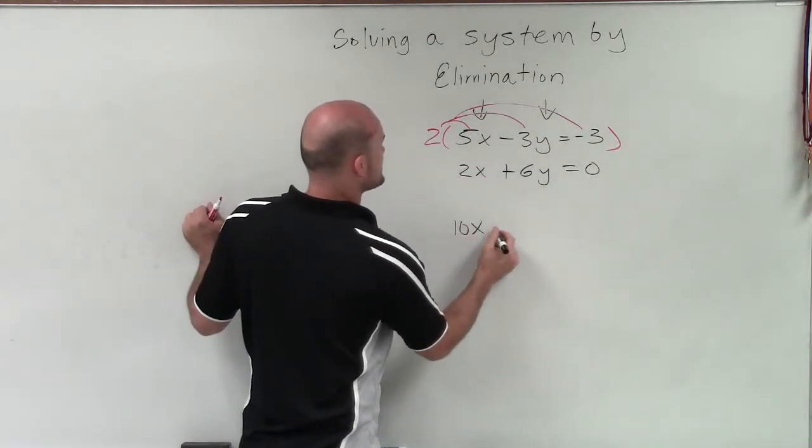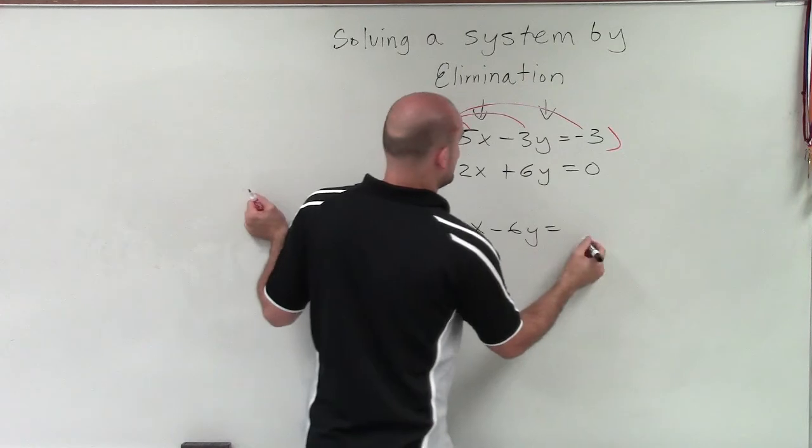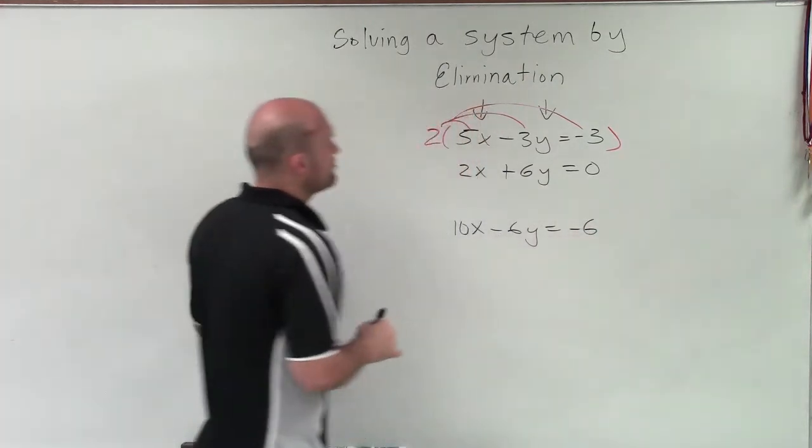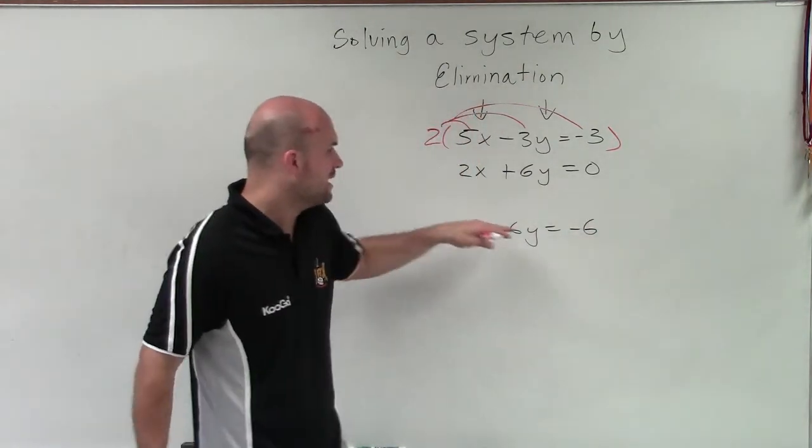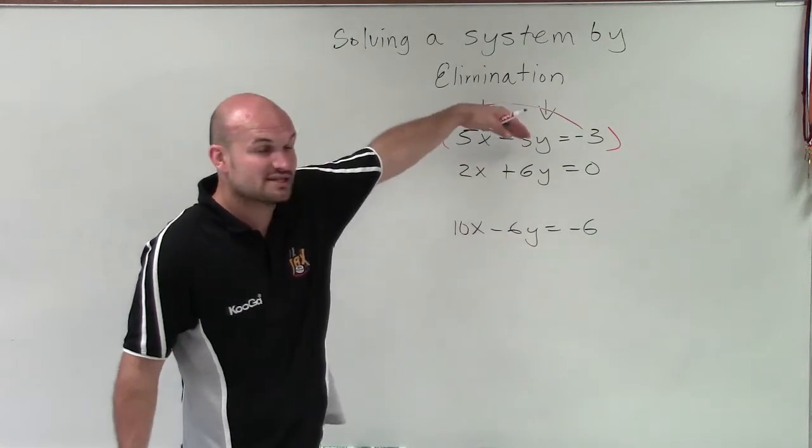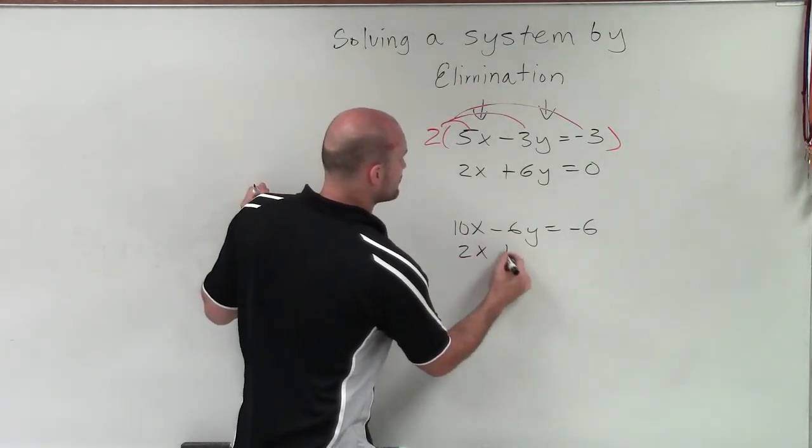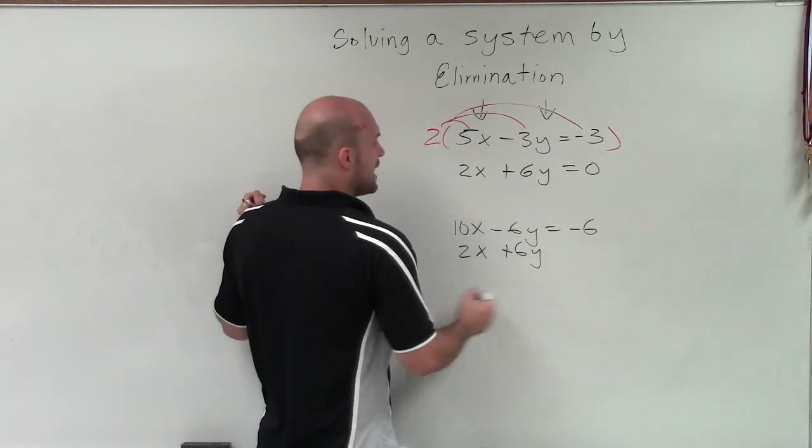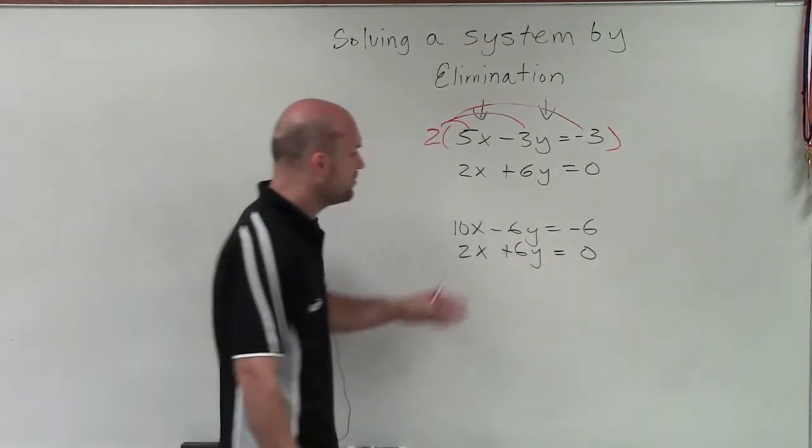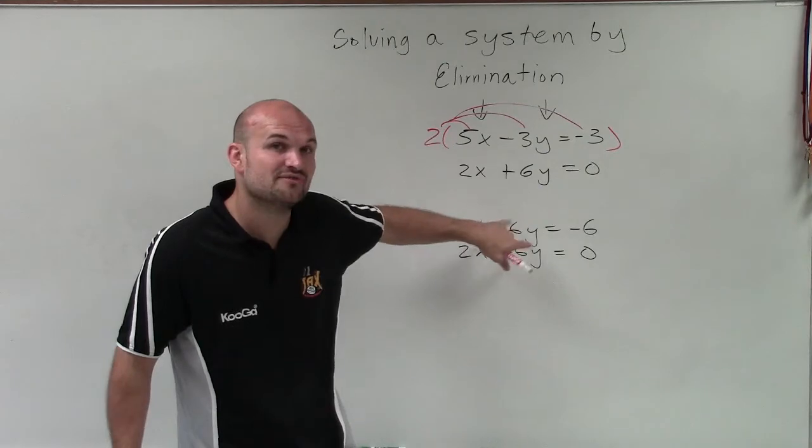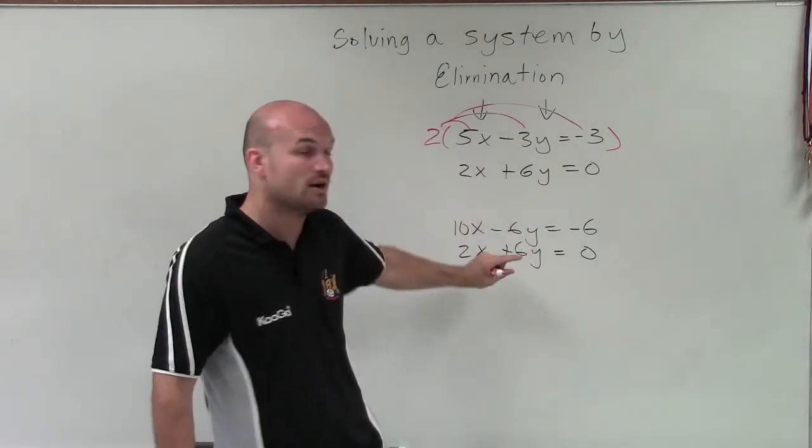So therefore, I'll have 10x minus 6y equals negative 6. So by multiplying by 2 by everything, I get this equation, which is equivalent to this equation. But what's so special about it is now when I write in my second equation, I have now coefficients that the absolute value are the same, but one's negative, one's positive.